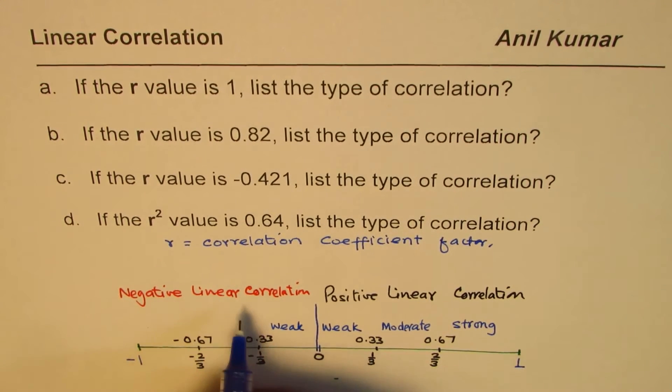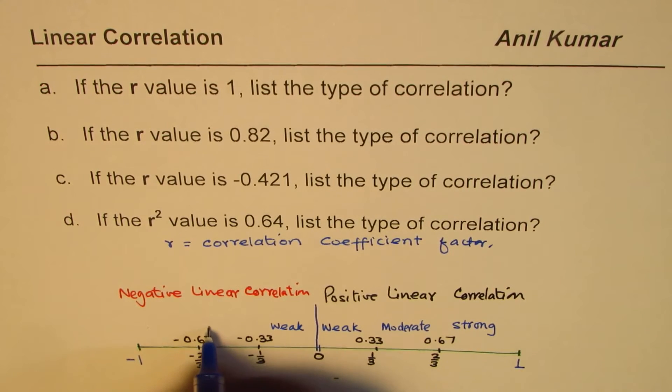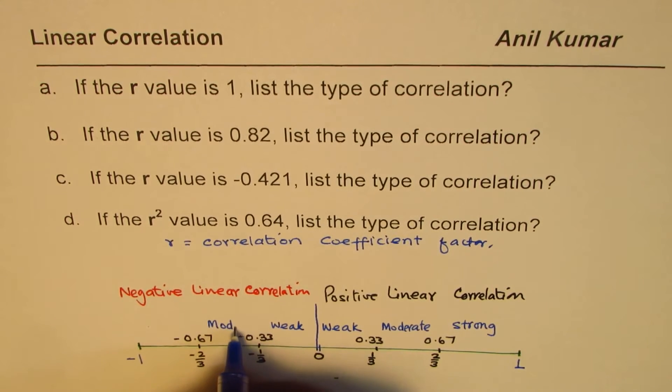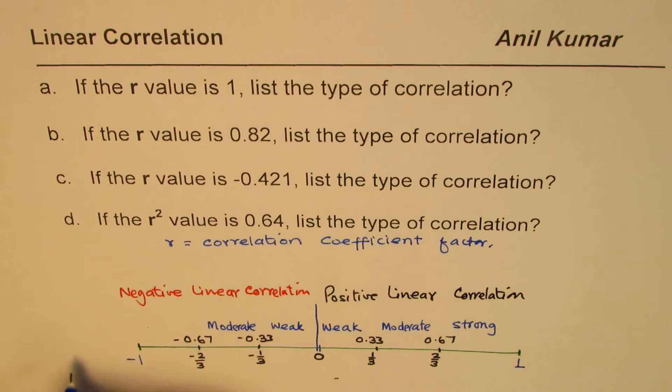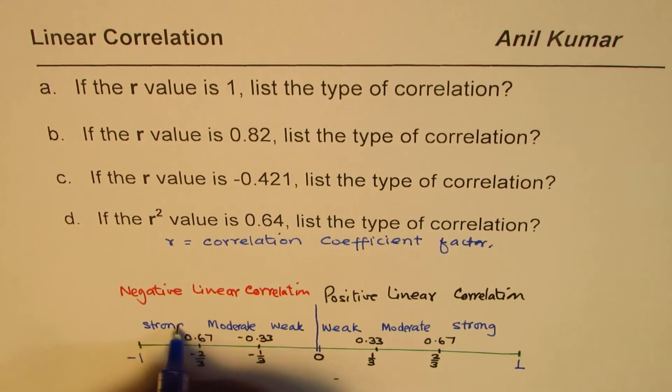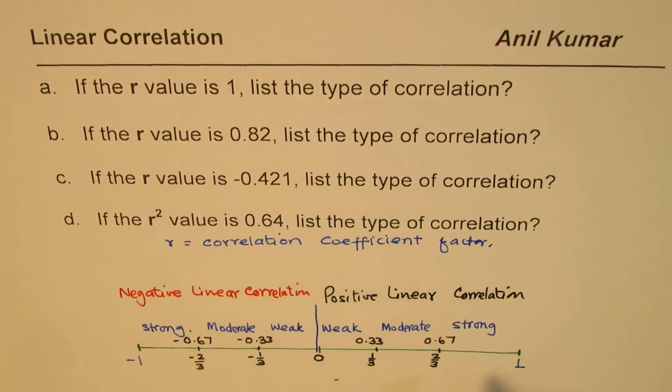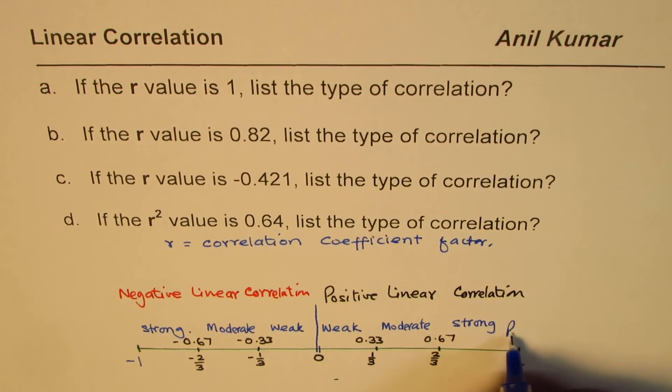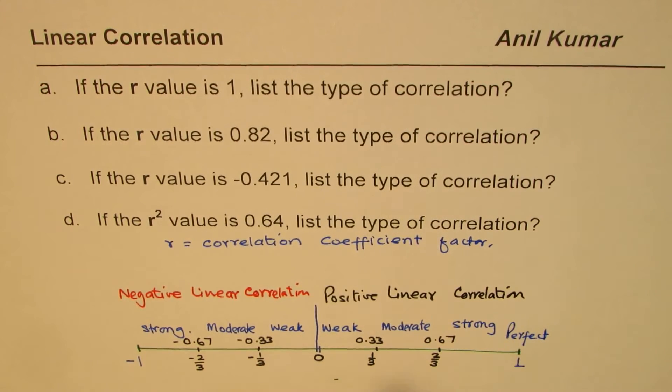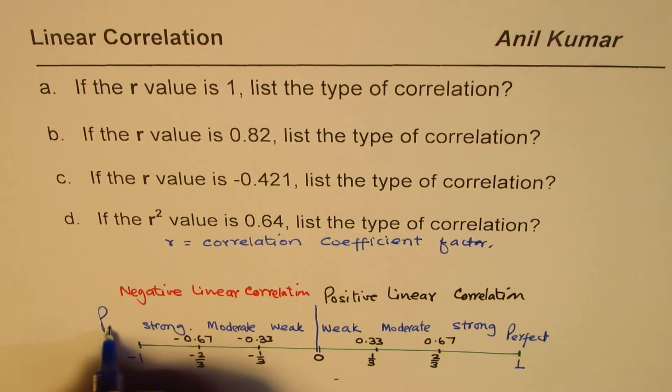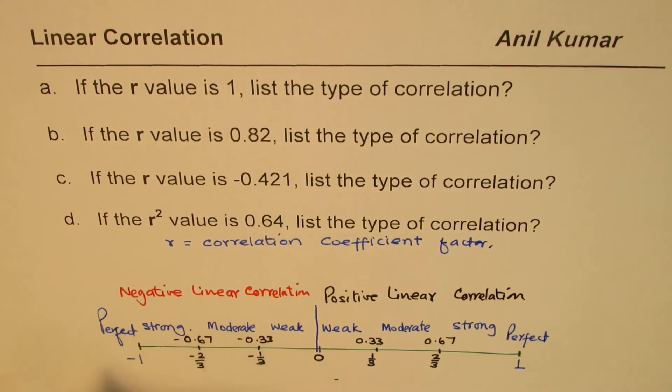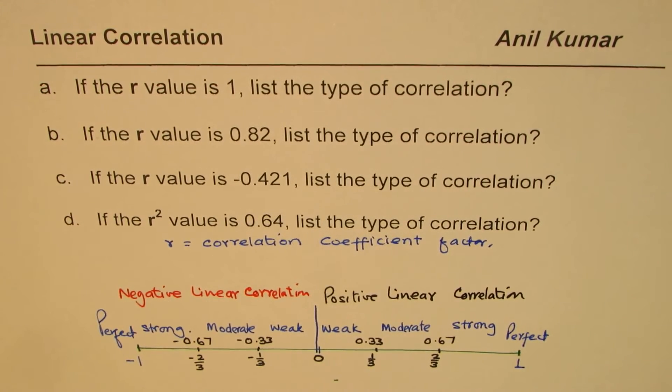So correlation could be negative weak, could be negative moderate, or negative strong. In case it is 1 or minus 1, we use the word perfect. So perfect positive linear correlation or perfect negative linear correlation. So these terms will help us answer the given question.